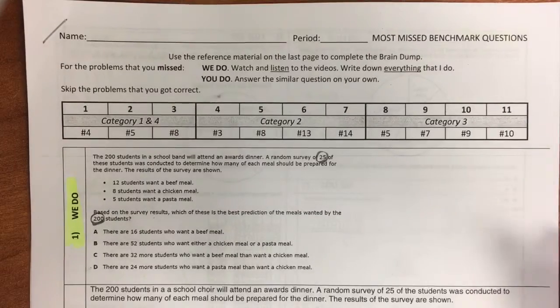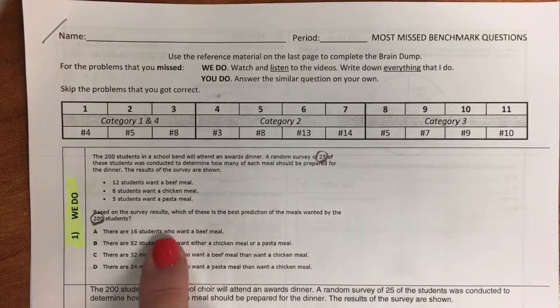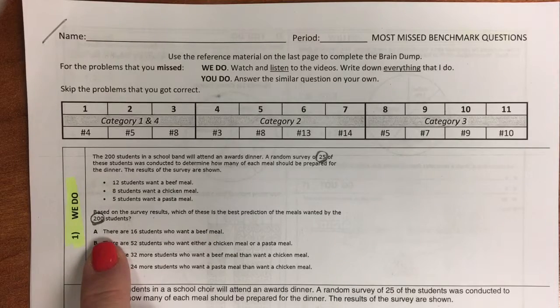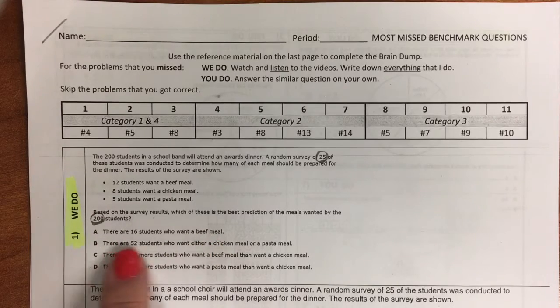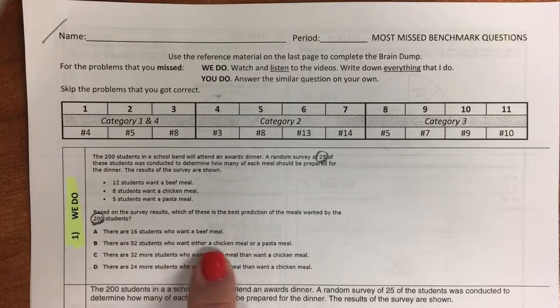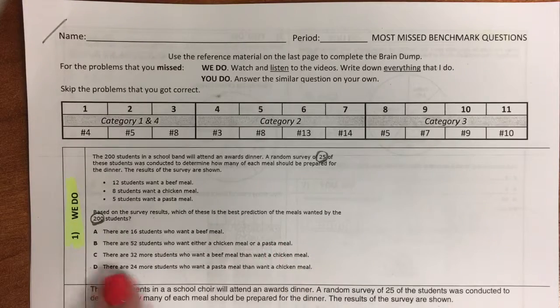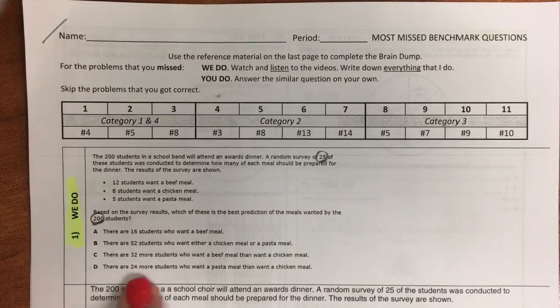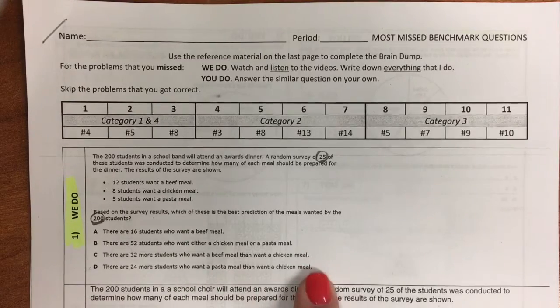Draw a star by number one. You're going to need to set up a proportion. So our answer choices are that there are 16 students who want a beef meal, there are 52 who want either a chicken meal or pasta meal, there are 32 more students who want a beef meal than chicken meal, there are 24 more students who want a pasta meal than chicken meal.